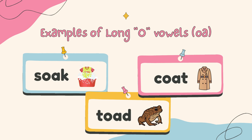Next, you have O and A together, but it's going to make the sound O only, like the first picture: soak, coat, toad. In this case, the A is silent — very, very quiet. So you only say O.